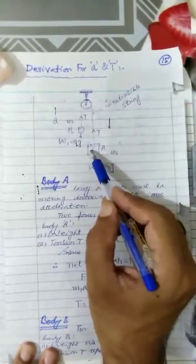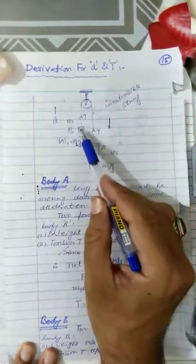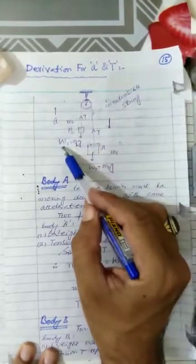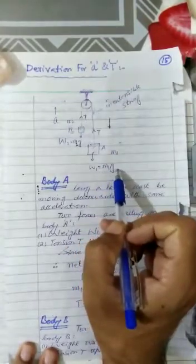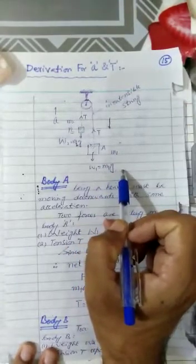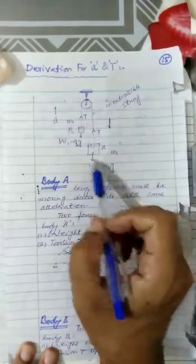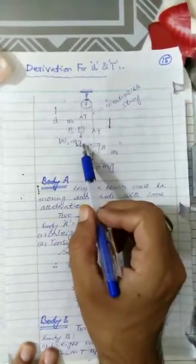Weight of body A is acting vertically downward in the form of W1, weight of body B is W2 acting vertically downward. And we know that weight is equal to mass Mg, so here mass is M1 so M1g. Here is mass M2 so M2g.